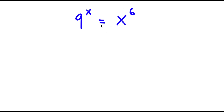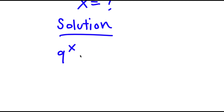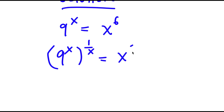In this problem, I have 9 to the power of x is equal to x to the power of 6, and I'm going to find the value of x. For my solution, I'll start with 9 to the power of x is equal to x to the power of 6, and I'm actually going to take the power of 1 over x on both sides. So now I have 9 to the power of x, to the power of 1 over x, is equal to x to the power of 6, to the power of 1 over x.